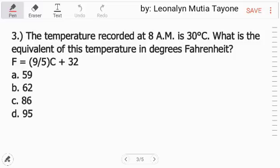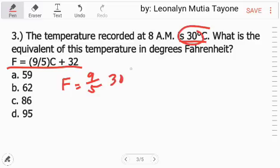Number three, the temperature recorded at 8 a.m. is 30 degrees Celsius. What is the equivalent of this temperature in degrees Fahrenheit given naman ang formula? So, i-fill in lang natin. 9 over 5, 30 degrees plus 32.